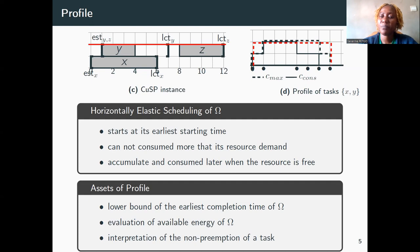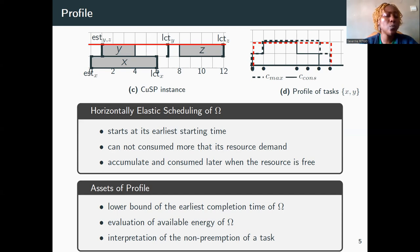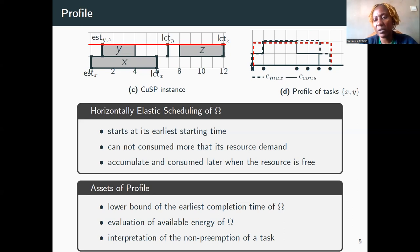Let's talk about the profile. The profile is a data structure designed to schedule tasks in a horizontally elastic way. A set of tasks is said to be horizontally elastically scheduled if any task starts at its earliest starting time, consuming not more than its required capacity. At any time when the total capacity of the resource is exceeded, the surplus of energy is accumulated and consumed later when the resource is no longer saturated. The profile data structure is a linked list where nodes are called time points. It allows computing at each time point the amount of resource available, required, and consumed by a set of tasks.